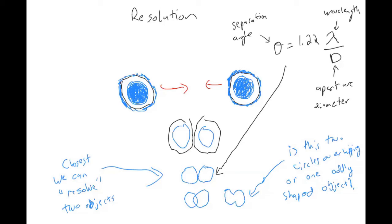The separation angle is measured in radians, not degrees. We're going to use this equation to investigate different scenarios: the resolution of a telescope, the resolution of a microscope, and also why we're limited in the sizes of things we can measure based on the wavelength of the light we're using.